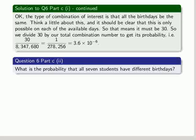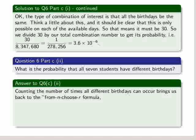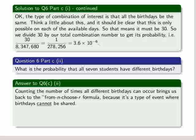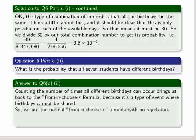Okay, what is the probability that all 7 students have different birthdays? So this is kind of the opposite, that none of the birthdays coincide whatsoever. Okay, counting the number of times that all different birthdays can occur brings us back to the n choose r formula, because it's a type of event where the birthdays cannot be shared. So that's the condition in this type of combination. They cannot be shared. So we use the normal n choose r formula.